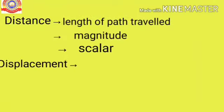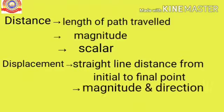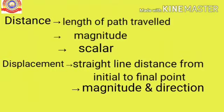First one is distance. Distance is the length of path travelled. Distance has only magnitude, no direction, so it is a scalar quantity. Displacement is the straight line distance from the initial point to the final point. It has both magnitude and direction, so it is a vector quantity.